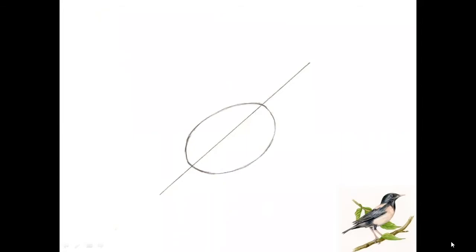The next step is to represent the body of the bird, so draw an oval. Thirdly, we need to represent the head of the bird, so draw a circle. Now make sure the proportion of the head is relative to the body, because some birds have smaller heads in comparison to the body.